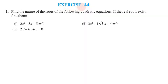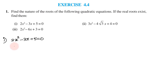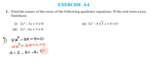Exercise 4.4, Problem number 1: Find the nature of roots of the following quadratic equations; if real roots exist, find them. First equation: 2x² - 3x + 5 = 0. Comparing with ax² + bx + c = 0, we get a = 2, b = -3, c = 5.